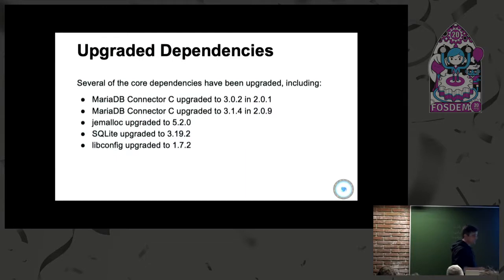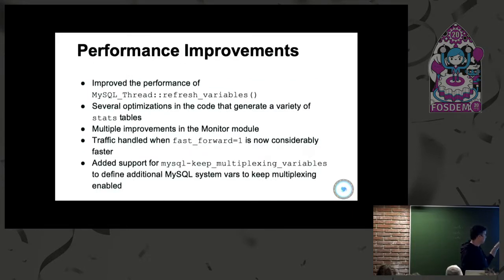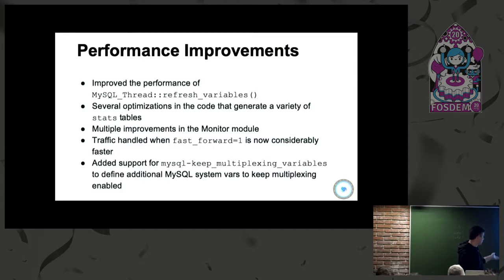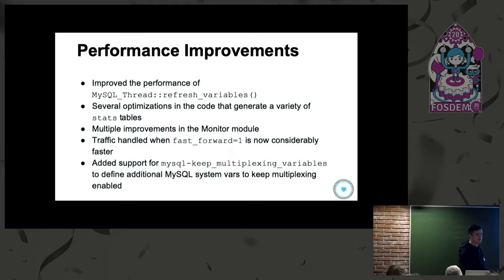We've upgraded a lot of our internal dependencies, which led to many code changes. We moved to the MariaDB Connector version 3, upgraded jemalloc to version 5.2, and also upgraded SQLite and libconfig. We improved the performance of the MySQL refresh variables process, which updates all stats variables for every running thread and process — the changes made a big improvement. We also did a complete overhaul of the stat tables and rewrote a lot of the monitor module code, and addressed performance issues in fast-forward mode.